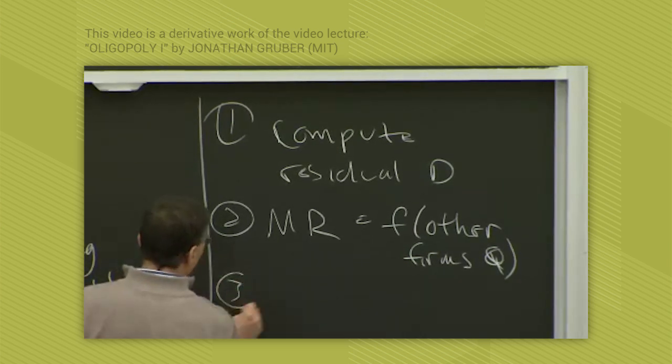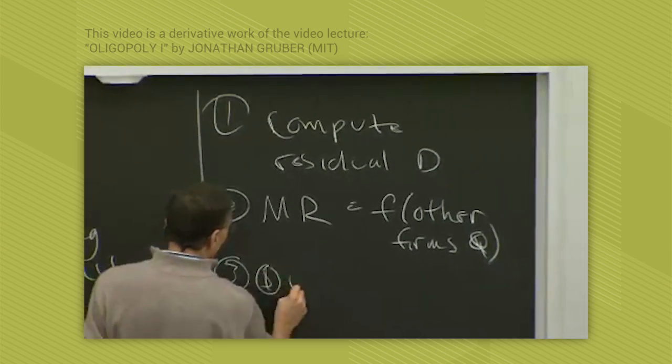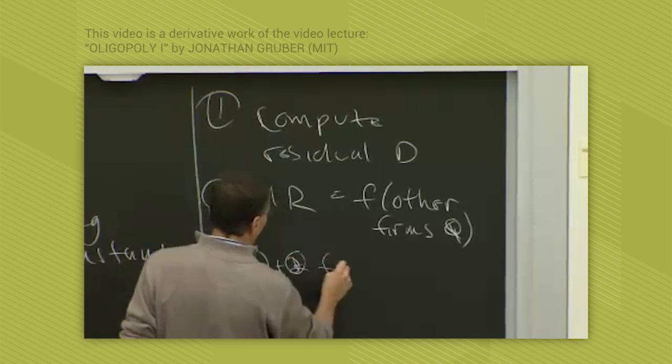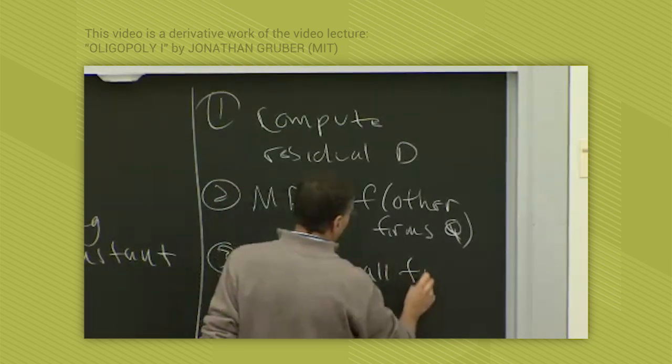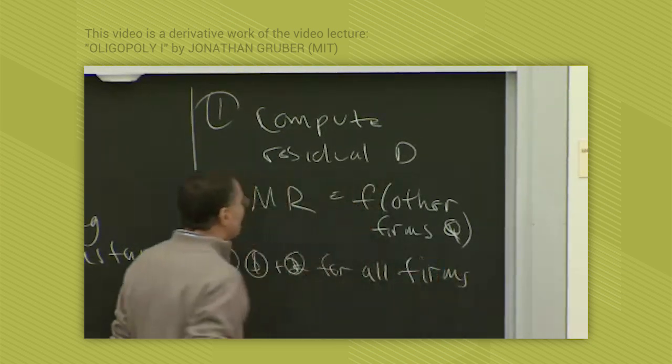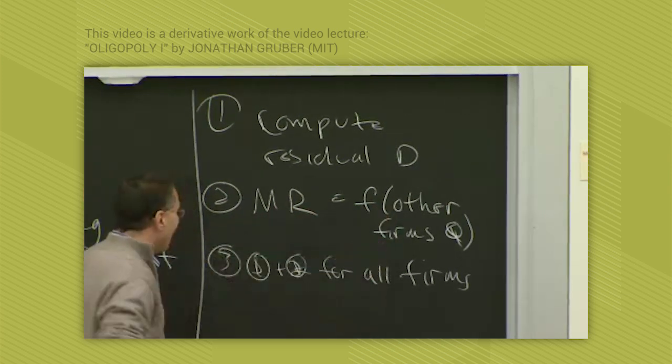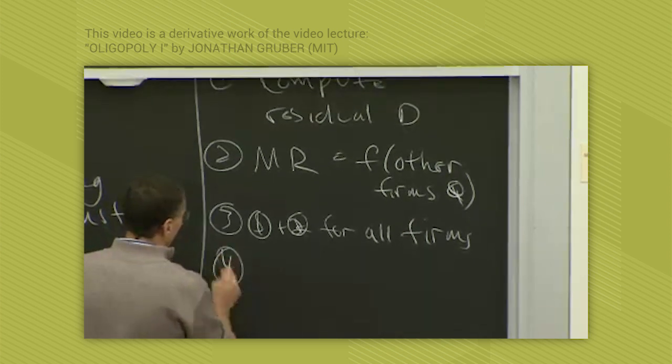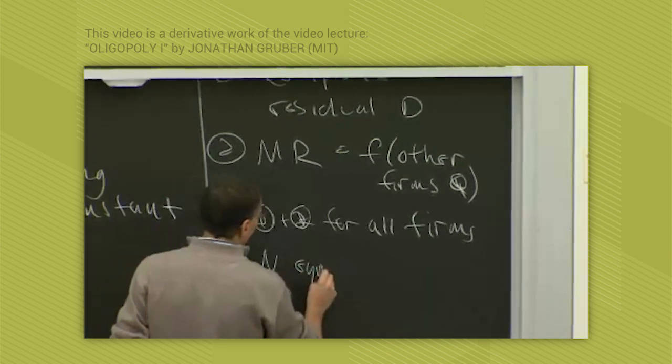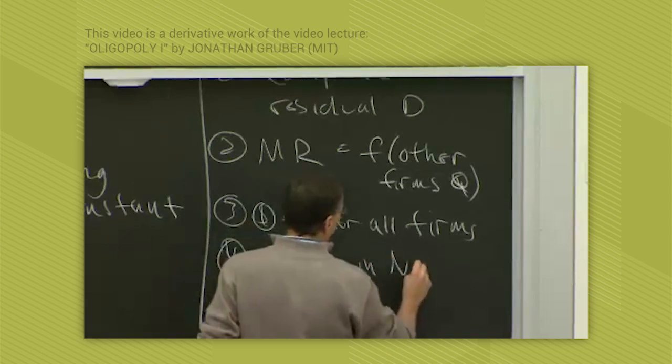You then do the same, do one and two for all firms. So for each firm you end up with a marginal revenue function as a function of all of the firm's quantities. And then that leaves you, step four, is you have n equations and n unknowns and you solve.